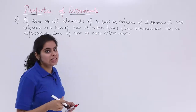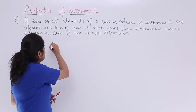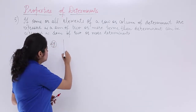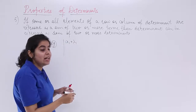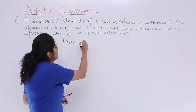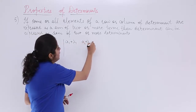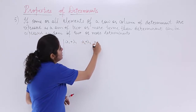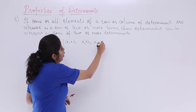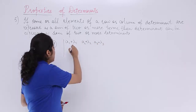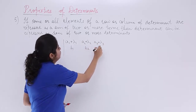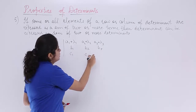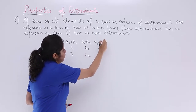We are starting with a determinant where the elements in the first row are in the form which can be expressed as a sum — specifically a1 plus lambda1, a2 plus lambda2, a3 plus lambda3 — and the remaining elements are b1, b2, b3 and c1, c2, c3.